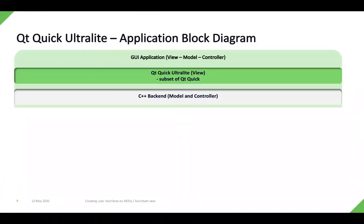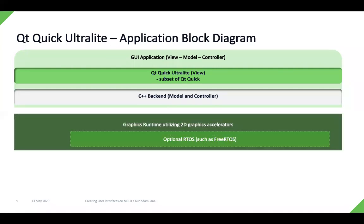Let's look at an application block diagram of a Qt Quick Ultralight application. The GUI application is built under a model-view-controller architecture, where the view part is developed in Qt Quick Ultralight — which is basically a subset of Qt Quick — so you're developing the view or UI part in QML. The backend, which is the model and controller, is implemented in C++. That then uses the graphics runtime, which in turn calls the 2D graphics accelerator for each of the MCUs. You can also optionally use an RTOS such as FreeRTOS for task scheduling, but it's not mandatory.